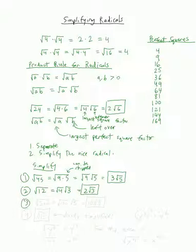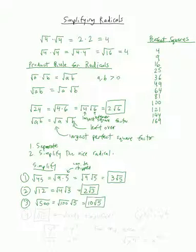How about the square root of 500? Seems like a huge number, but looking at the list, we notice that 100 goes into it. Yes, 4 goes in, and yes, 25 goes in, but you want the largest number that goes in, so that's 100. We have 100 times 5 as the leftover, giving us square root of 100 times square root of 5, which becomes 10 root 5.